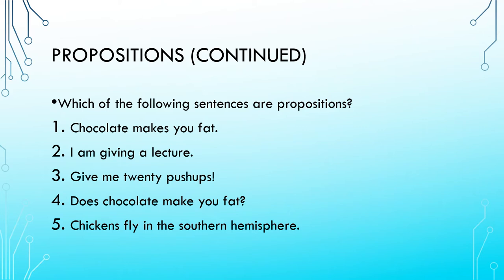Looking at our list, we have some propositions and some non-propositions. The first sentence — 'chocolate makes you fat' — is a proposition. Whether it's true or false doesn't matter; only that it could be true or false. Because I can attribute a value of true or false to that sentence, it's a proposition and can be something I must try to prove. Similarly, 'I am giving a lecture' is a proposition — in my instance it's true, for you it might seem false. Either way, it's a proposition because it has a truth value.